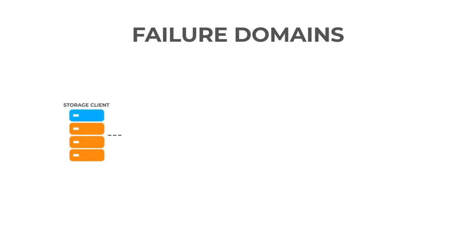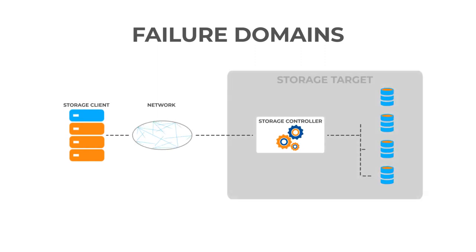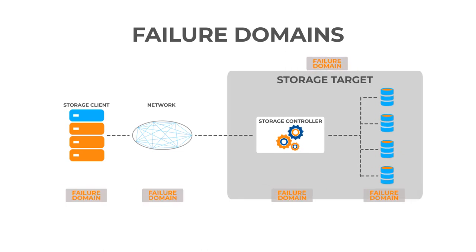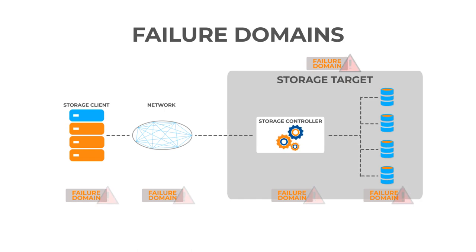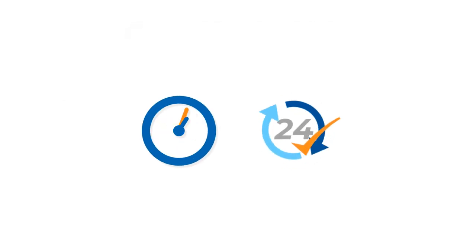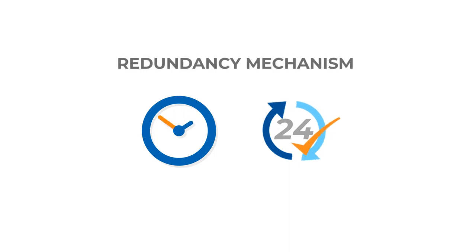For example, the storage client, the network, the storage target, and within the storage target, the storage controller and the disks are all different failure domains. Local faults and failures are inevitable, but to ensure that these faults and failures do not impact overall durability and availability from a user's perspective, some type of redundancy mechanism is typically put in place.